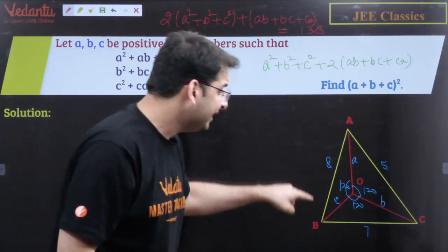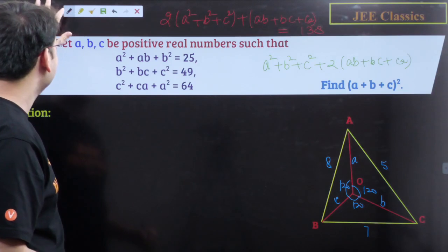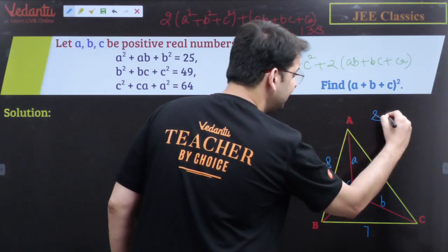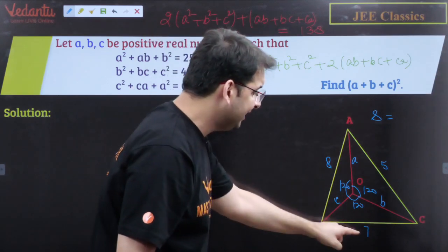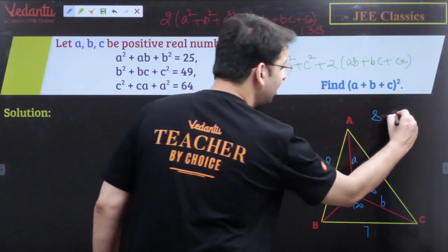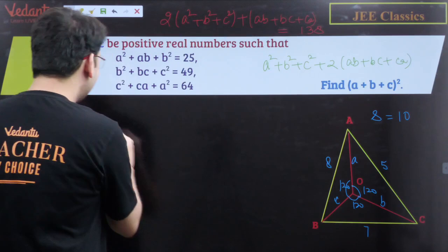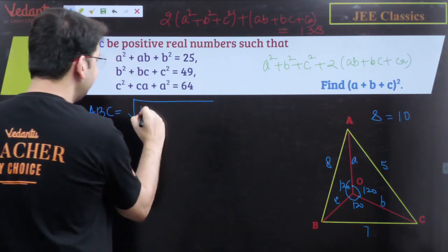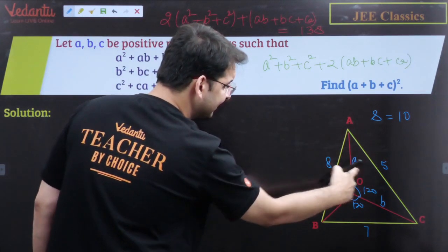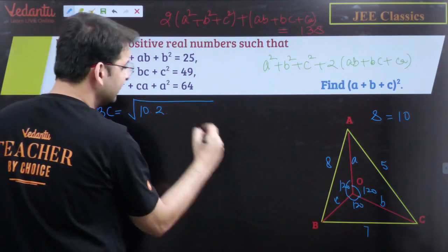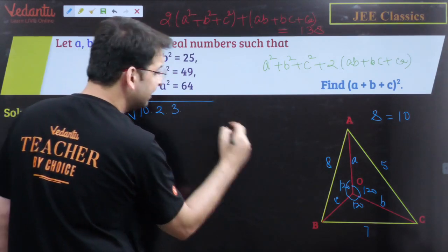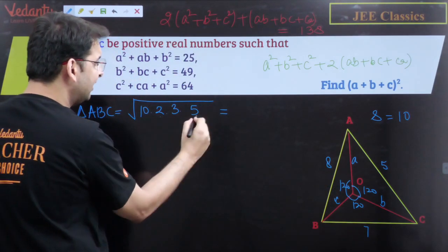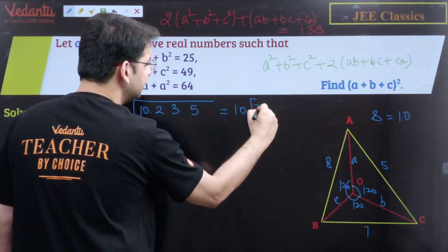Can we find the area of triangle ABC using Heron's formula? The sides are 5, 7, and 8, so the semi-perimeter s = (5+7+8)/2 = 10. Area = √[10·(10−8)·(10−7)·(10−5)] = √[10·2·3·5] = √300 = 10√3. So the area of triangle ABC is 10√3.